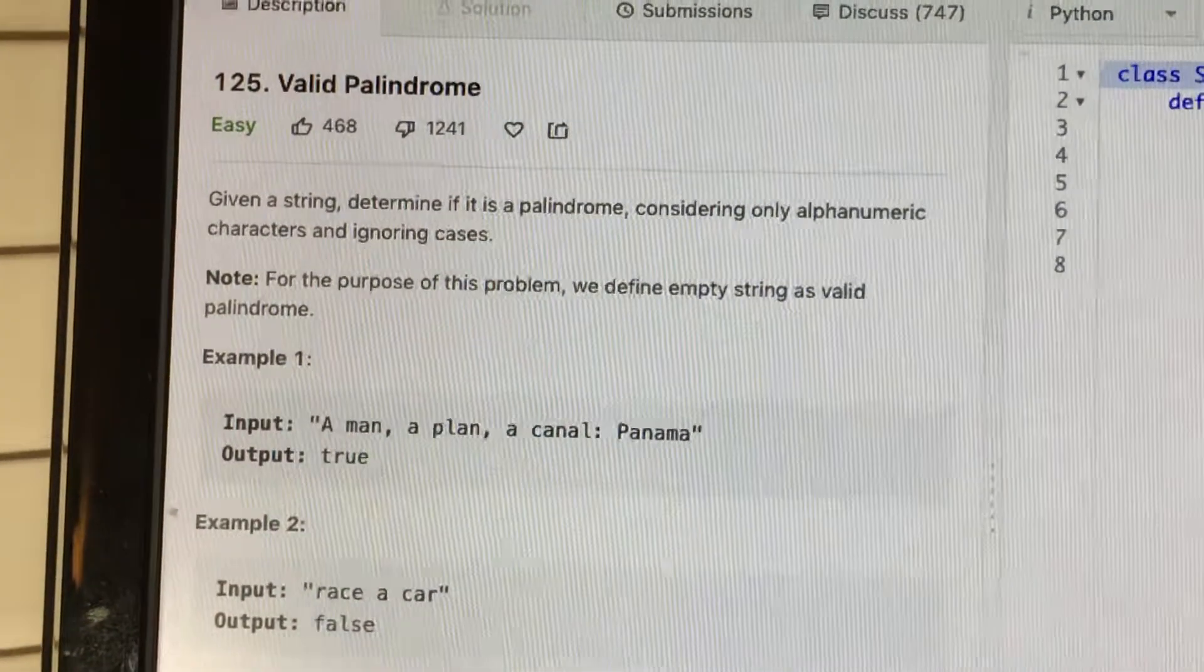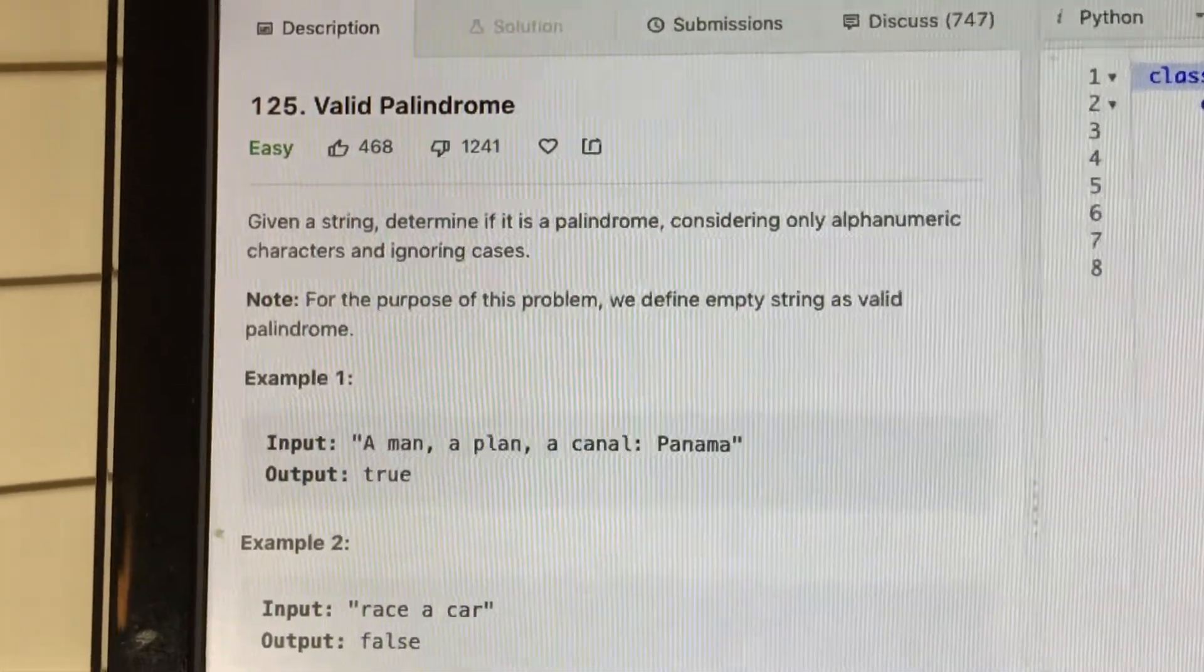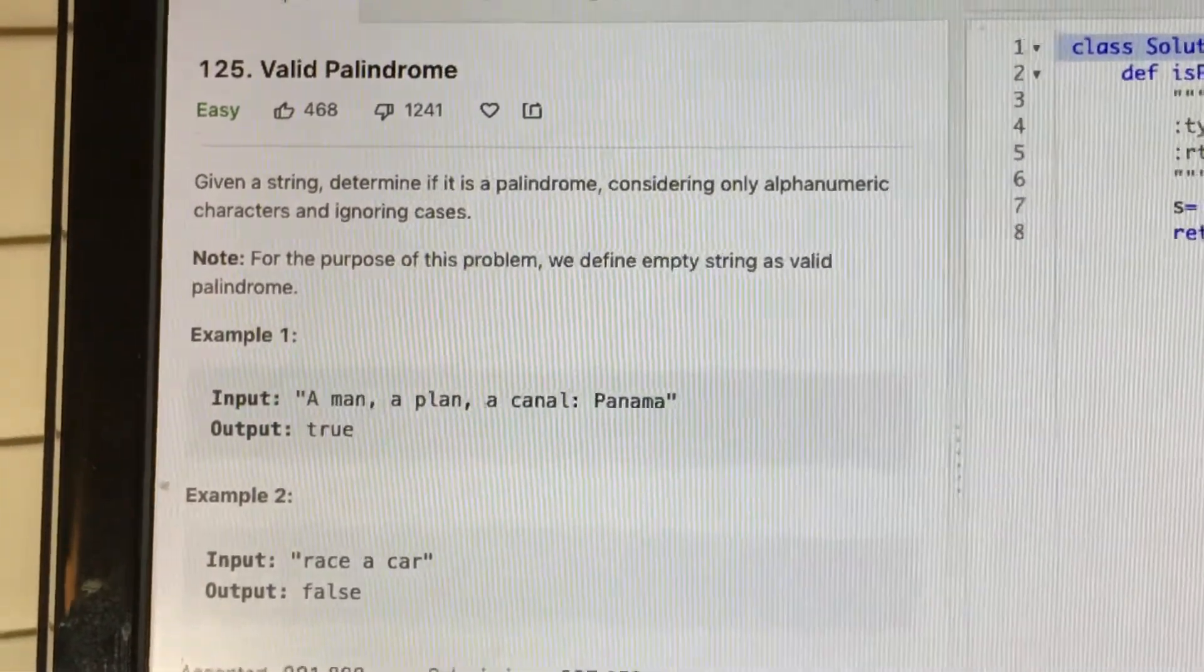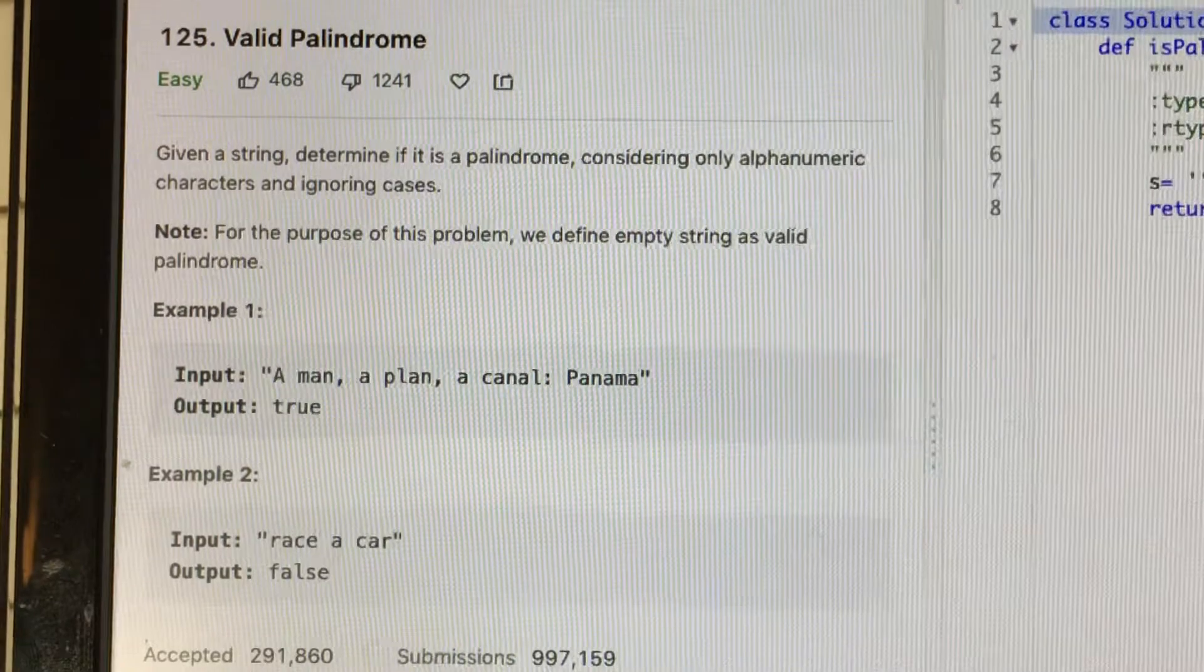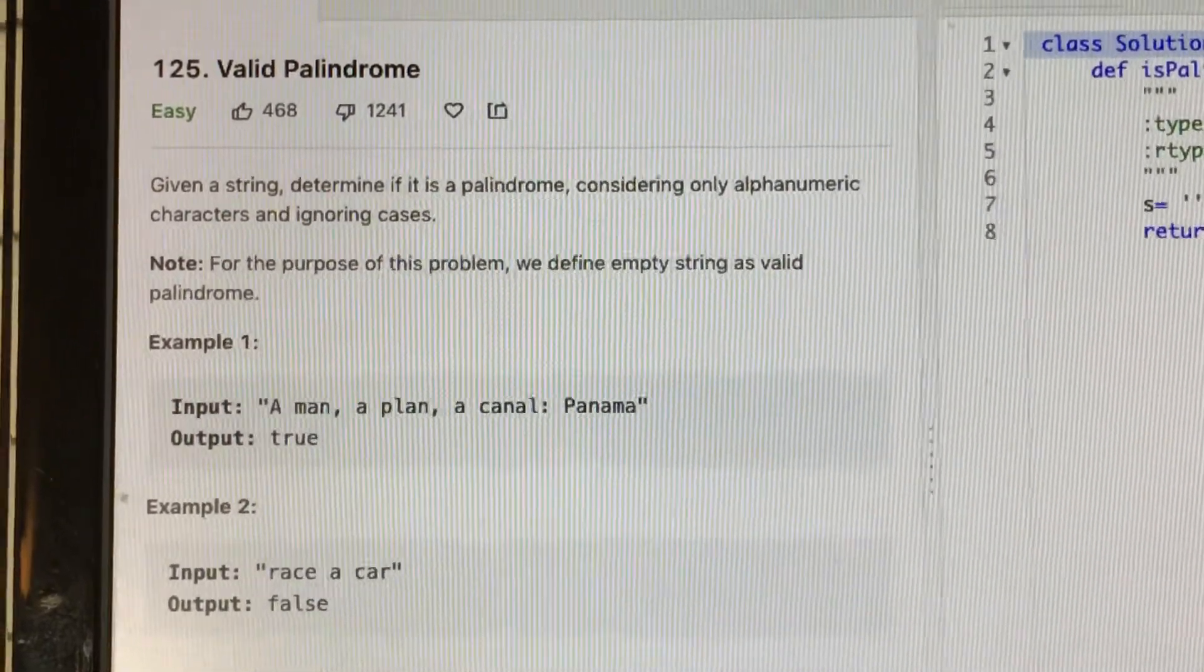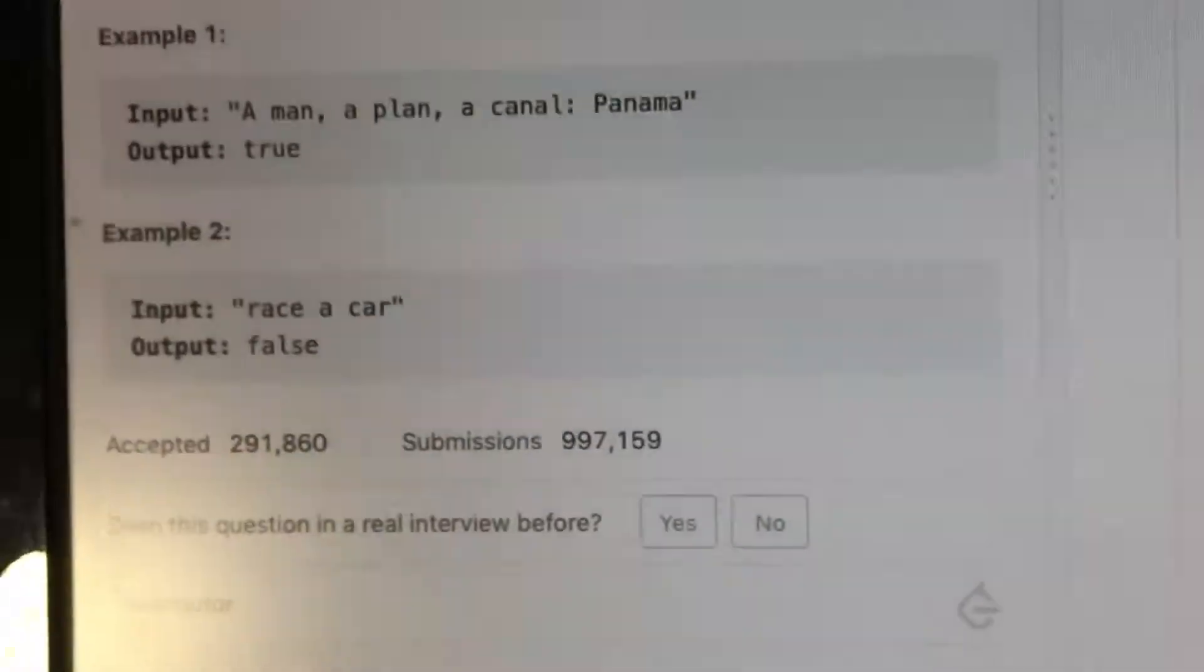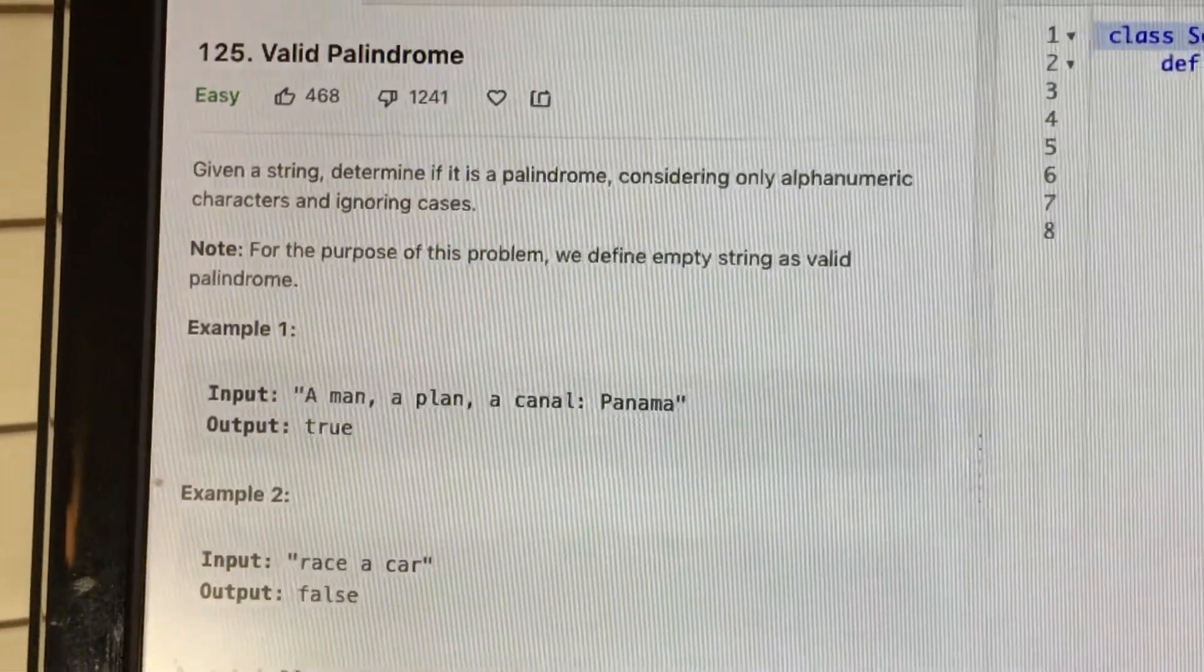Welcome back guys, now we have an easy yet tricky problem for finding a valid palindrome. A palindrome is a string of characters or numbers which is the same if we read it from right to left or left to right. This question was a little tricky if you read the description. It says that we have to only make the decision with respect to alphanumeric characters and we have to ignore the case, meaning a small 'p' is same as a capital 'P'.